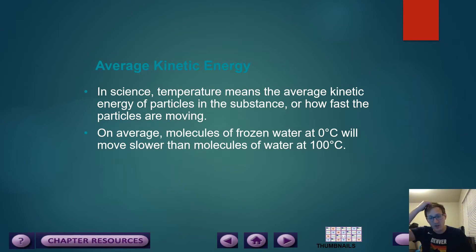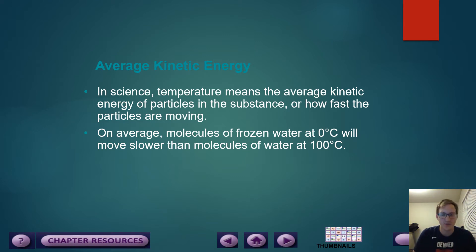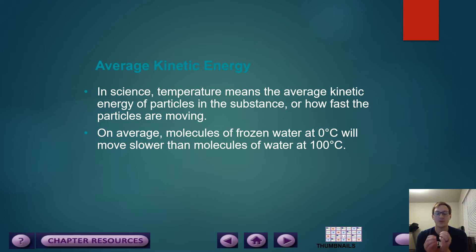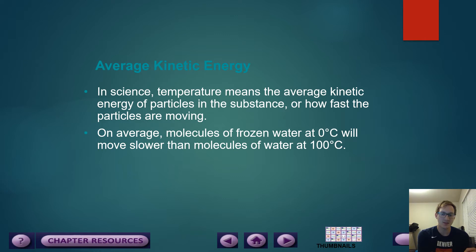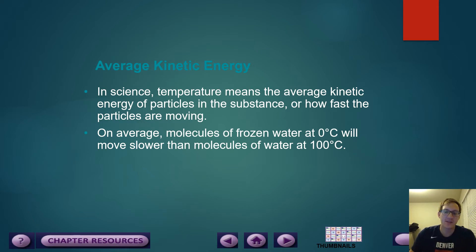On average, molecules of frozen water at zero degrees Celsius move slower than molecules of water at 100 degrees Celsius, which should be obvious because when water is frozen it is a solid — those things are not going to move as far or as fast as, say, something at boiling point, which is water vapor moving around sporadically. It's important to note that we haven't changed the actual molecules themselves, just how fast they are moving — it's still H2O at its solid state, through its liquid state, and even into its gas state.